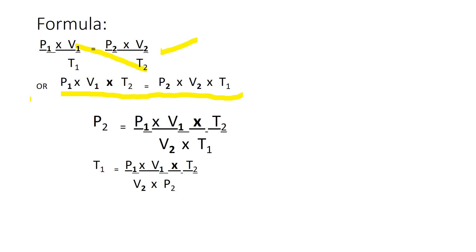From this, P2 equals P1 times V1 times T2 divided by V2 times T1. If P1 is the unknown, the equation is P1 equals P2 times V2 times T1 divided by V1 times T2.